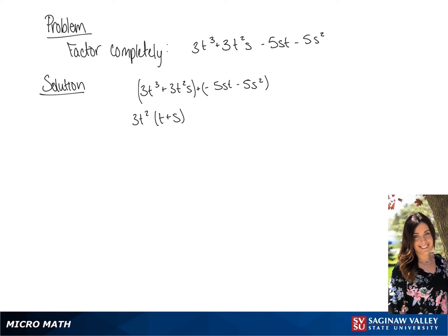And from the last two terms we can pull out negative 5s, giving us t plus s. If we rewrite this we will have 3t squared minus 5s times t plus s.